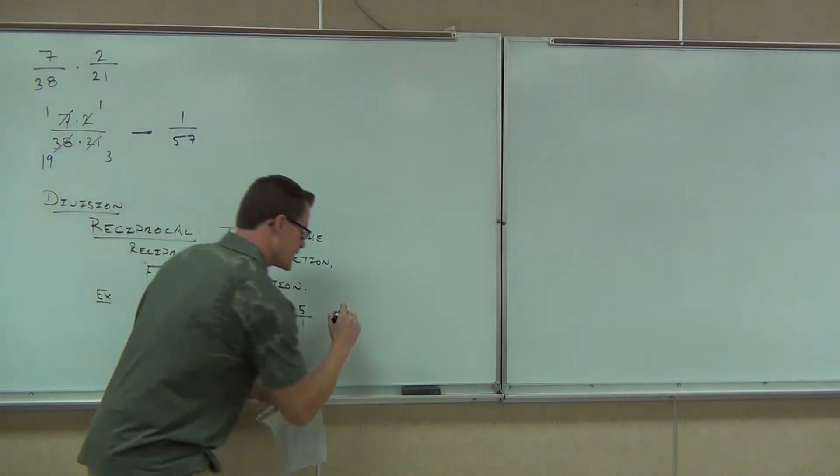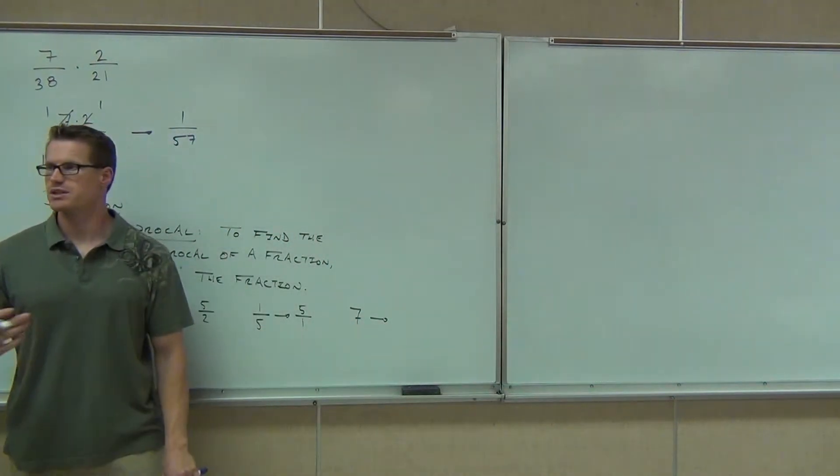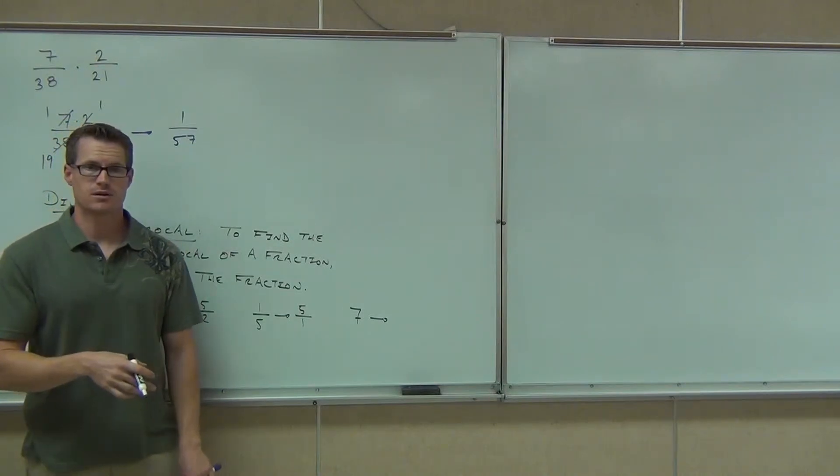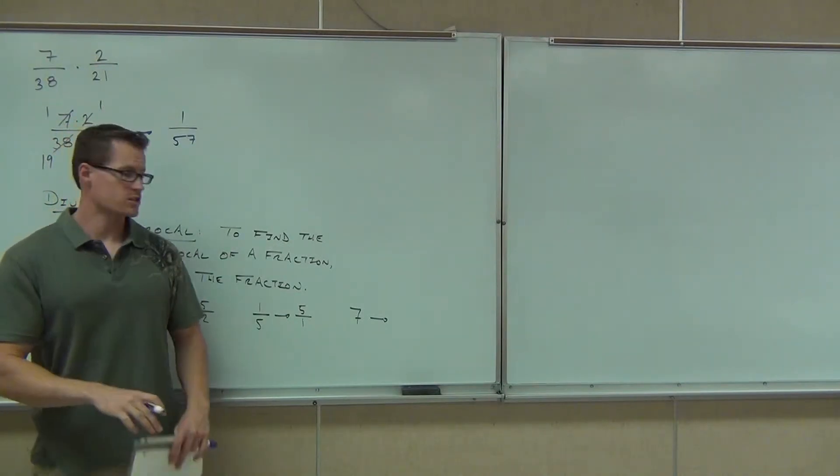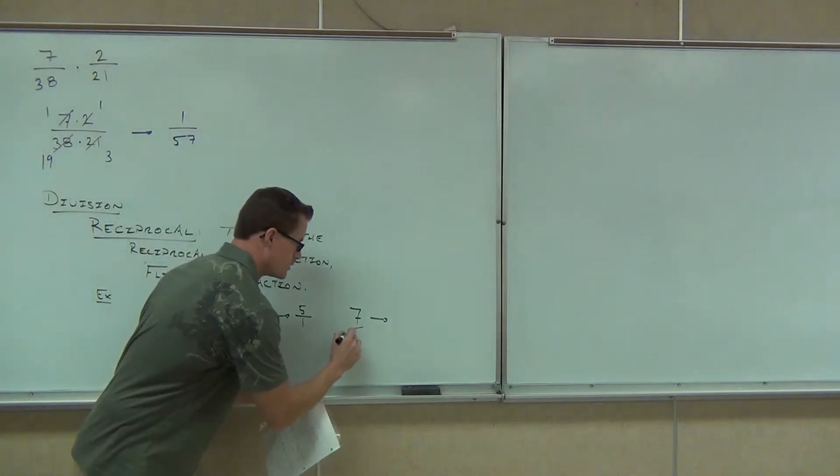Well, what that suggests is that if I have a whole number, can I find the reciprocal? For instance, if I have 7, can I find the reciprocal of 7? 1 over 7. Well, this is already, this is like 7 over 1, right? 1 over 7. Good.